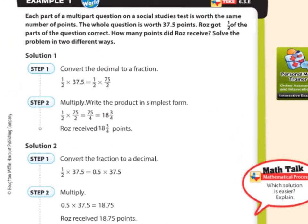So look at example one. Each part of a multi-part question on a social studies test is worth the same number of points. The whole question is worth 37 and a half points. Roz got half of the parts of the question correct. How many points did Roz receive? Solve the problem in two different ways. So we're finding half of the problem, the question. Remember what of means? Of means multiply.